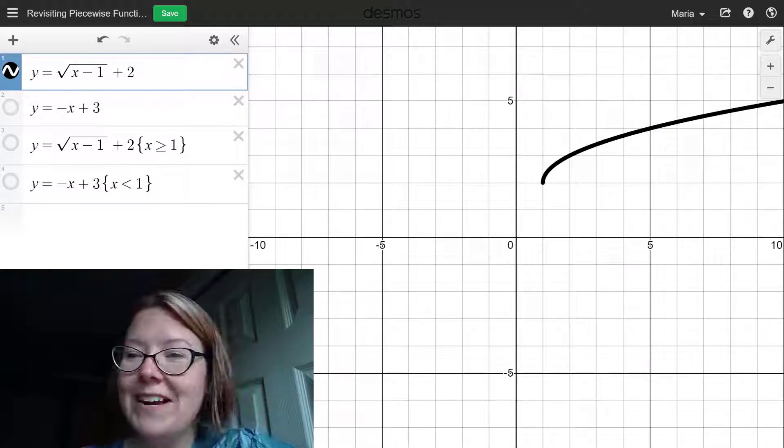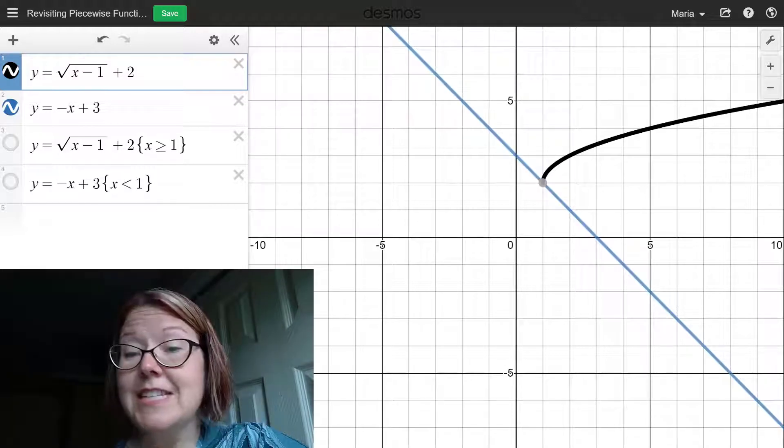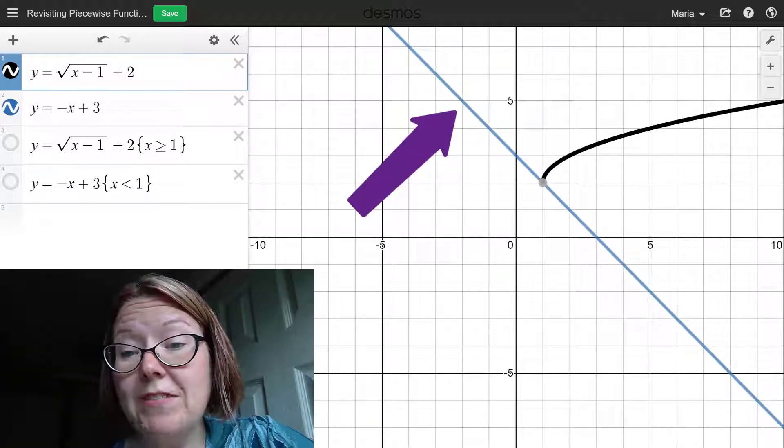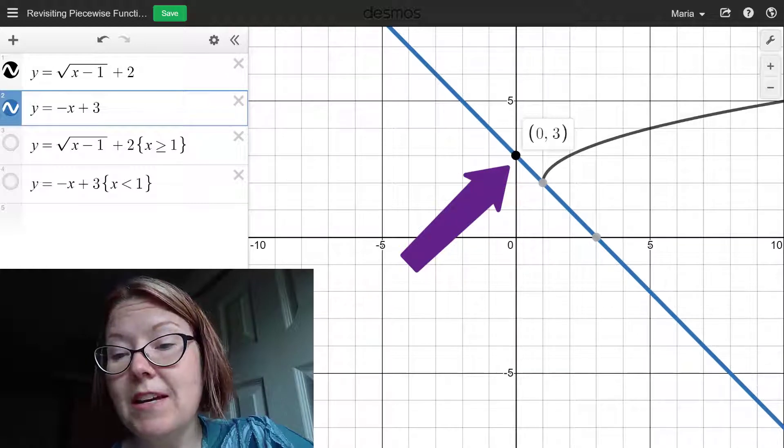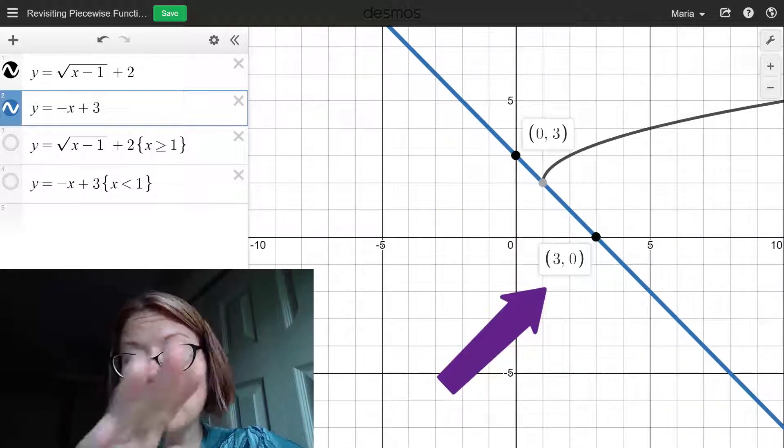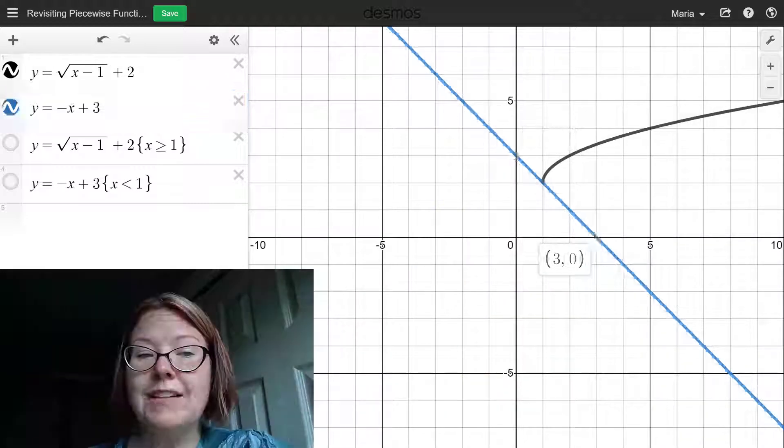Then we'll add the function y equals negative x plus 3. This is a decreasing straight line with a y-intercept at (0, 3) and an x-intercept of (3, 0). So it's a line that's at a perfect diagonal.